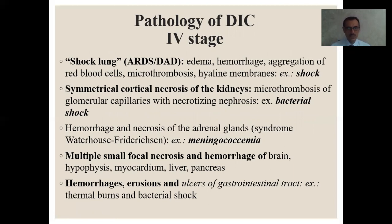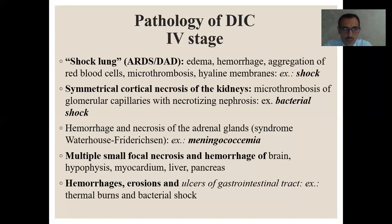We will discuss the changes of organs during DIC. The shock lung — called acute respiratory distress syndrome or diffuse alveolar damage — shows edema, hemorrhage, aggregation of red blood cells, microthrombosis, and hyaline membranes, for example in shock. Symmetrical cortical necrosis of the kidneys, characterized by microthrombosis of the glomerular capillaries with necrotizing nephrosis, for example in bacterial shock. Hemorrhage and necrosis of the adrenal glands — the Waterhouse-Friderichsen syndrome — for example in meningococcemia. Multiple small focal necrosis and hemorrhage of the brain, hypothalamus, myocardium, liver, and pancreas. Hemorrhagic erosions and ulcers of the gastrointestinal tract, for example in thermal burns and bacterial shock. Here is the gross view and histopathology of the diffuse alveolar damage.